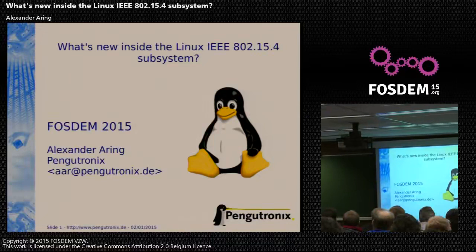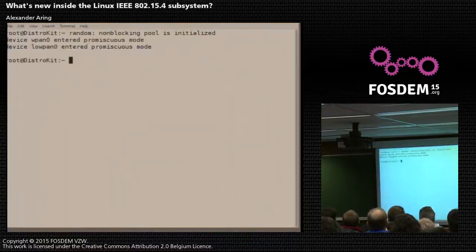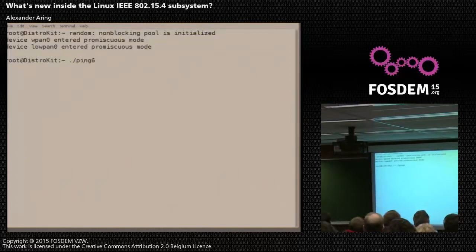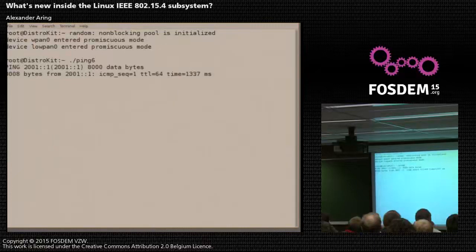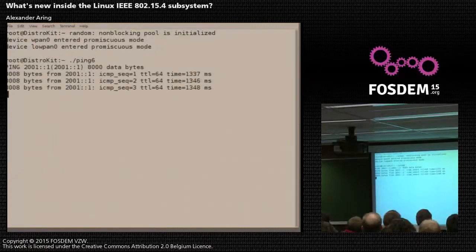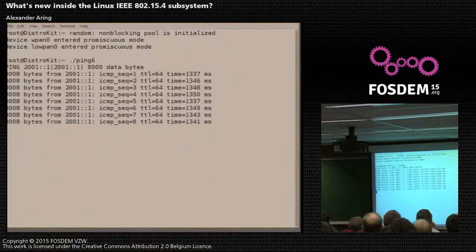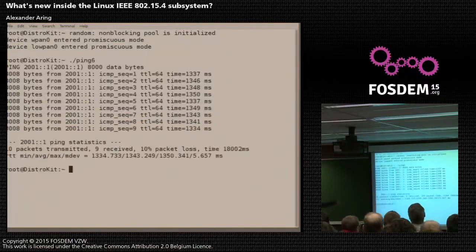First I want to demonstrate a little demo here. I set up two virtual machines, and each has a USB IEEE 802.15.4 transceiver connected. I'm pinging between the nodes inside the virtual machines. So that's an example — it's a very high load ping, 8000 bytes. You probably don't want it because the round-trip time is over a second. It's also because low power and such things.